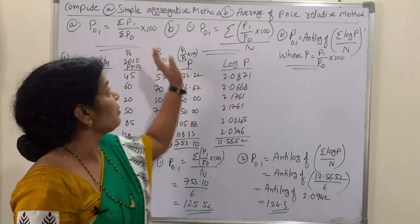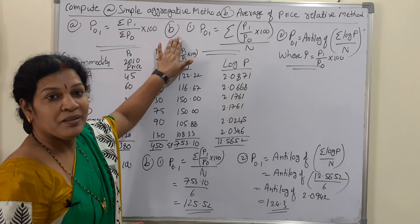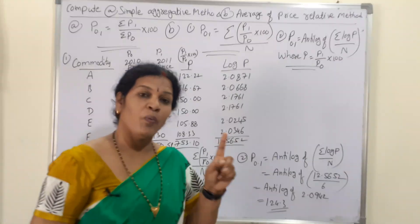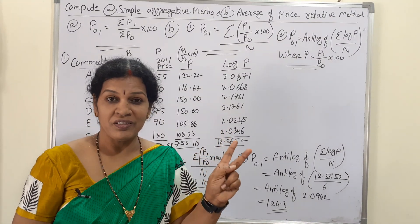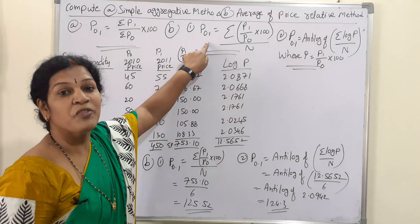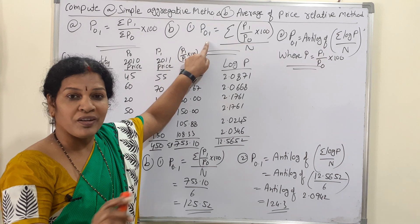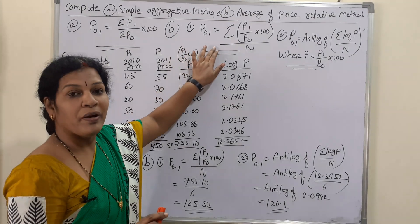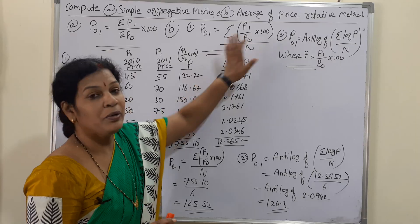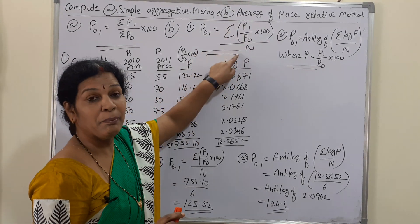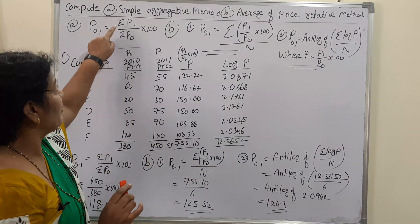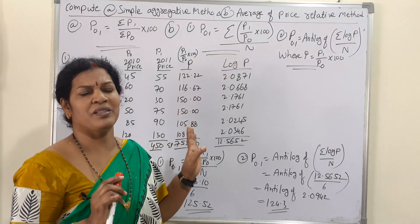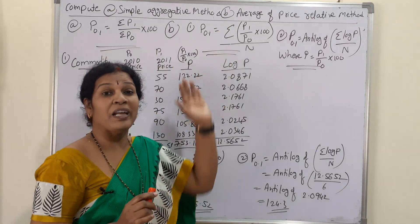Coming to the second type — the average of price relative method. This can be calculated in two ways: one is through index numbers, and the second is by using logarithms. Without using logarithms, the formula is P₀.₁ = [Σ(P₁/P₀ × 100)] / n. The upper part is the sum of price relatives and the lower part is n, the number of observations.